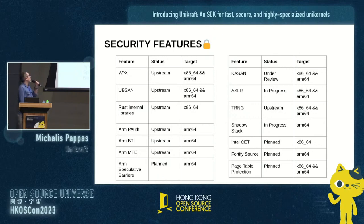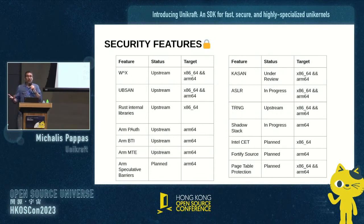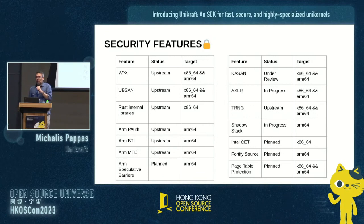You can see here the current state of different mitigations: WX/RX, and all modern hardware-assisted mitigations for ARM. You can also write libraries in Rust. ASAN is currently under review, ASLR is work in progress, and we already have hardware-assisted randomness upstream, with others on the way.